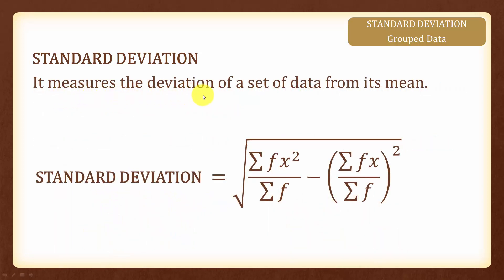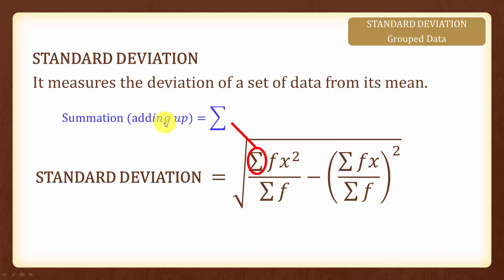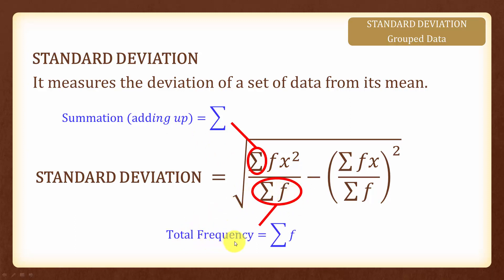Standard deviation is the measure of the deviation of a set of data from its mean, and the formula is given by this. The Σ symbol here represents the summation, which means the adding up of. The summation of f means we add up all the frequencies to give us the total frequency. Summation of fx² means that we multiply each value of x² with its frequency and add them all up.